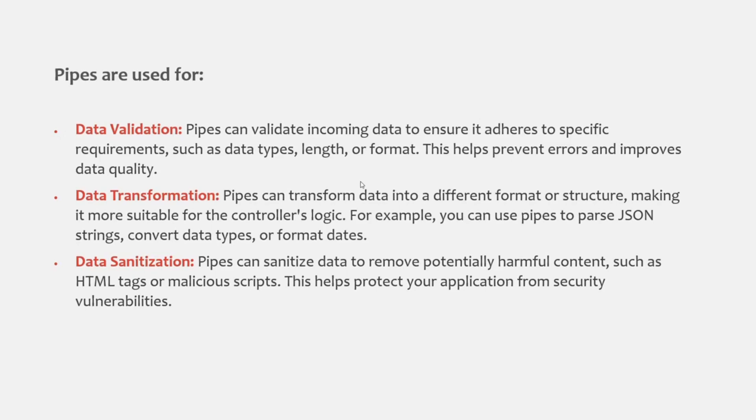We can also use a pipe for data transformation. Pipes can transform data into a different format or structure, making it more suitable for the controller's logic. For example, you can use pipes to parse JSON strings, convert data types, or format dates. We can also use pipes for data sanitization — pipes can sanitize data to remove potentially harmful content such as HTML tags or malicious scripts, helping protect your application from security vulnerabilities.